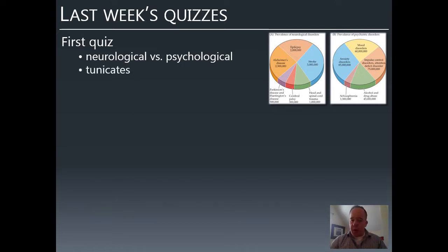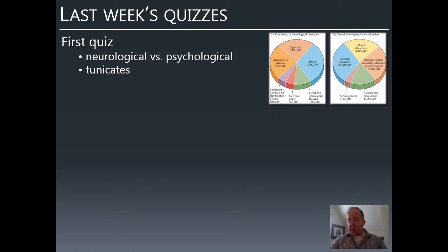Another commonly missed question was about tunicates and why they, quote unquote, eat their own brain. The idea is that you need a brain to sense the environment and respond to it. Once tunicates enter the second phase of their life cycle, they no longer need to do that—they're attached to a rock for the rest of their lives and can't move around. There's no meaningful sense in which they can respond to their environment, so there's no sense in which they need a brain.